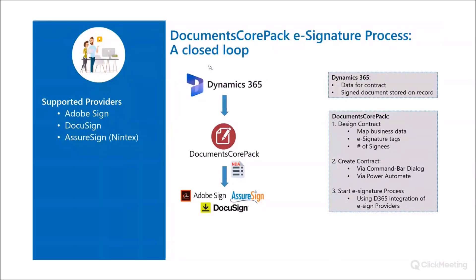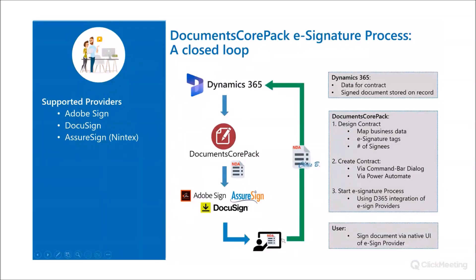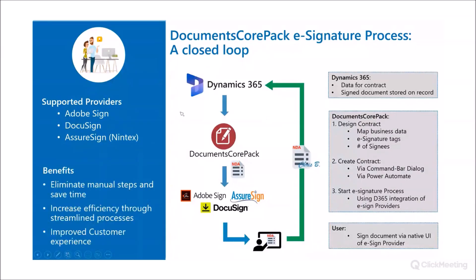The e-sign providers we support are the big three: Adobe Sign, DocuSign, and AssureSign. After that, the document goes to the e-signature provider. The user signs via the native UI of the e-signing provider, and once that's done, it's filtered back to Dynamics 365 — a totally closed loop. The main benefits are it eliminates a lot of manual steps. Everything is self-contained inside of Documents CorePAC, which eliminates possibilities of error and saves you time.